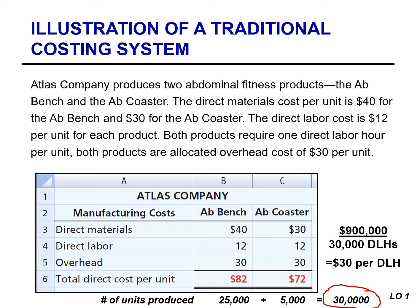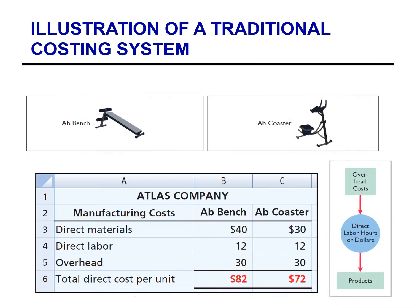Using a traditional costing system, the total unit cost for the Ab Bench and the Ab Coaster are $82 and $72, respectively. Atlas allocates the same amount of overhead cost per unit to both products because they use the same amount of direct labor hours per unit. However, using a single rate based on direct labor hours may not be the best approach for Atlas to allocate its overhead.